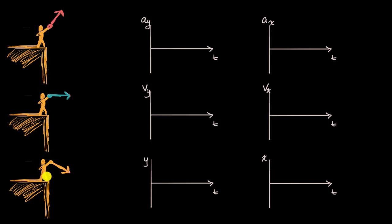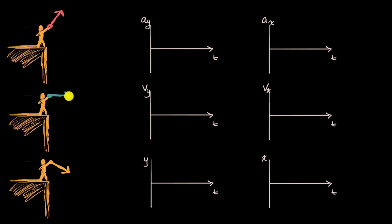In each of these pictures, we have a different scenario. We have someone standing at the edge of a cliff on Earth. In this first scenario, they are launching a projectile up into the air. In this one, they're throwing it straight out — not up or down, just straight out. And here, they're throwing the projectile at an angle downwards.